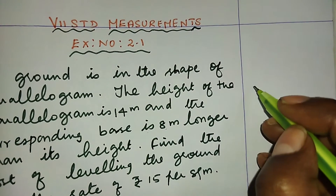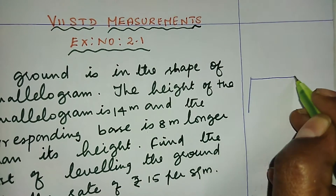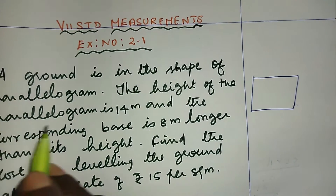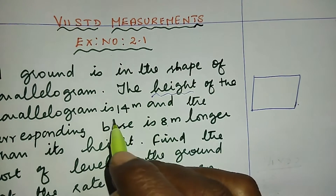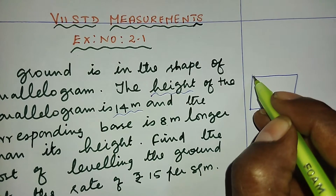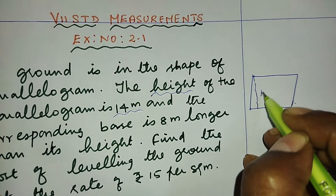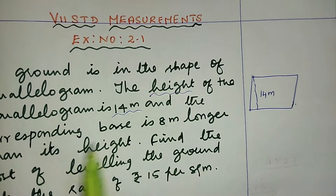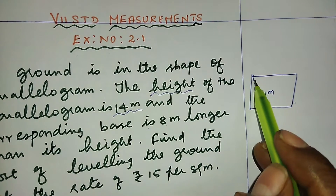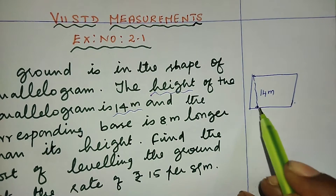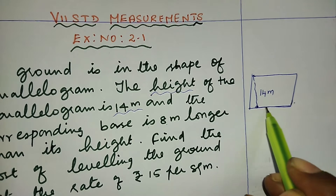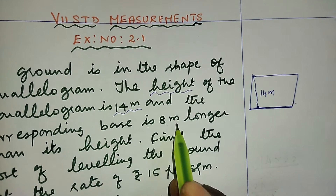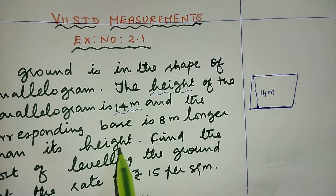This is a parallelogram shape. The height of the ground is 14 meters. The perpendicular line is 14 meters. The corresponding base is 8 meters longer than its height.